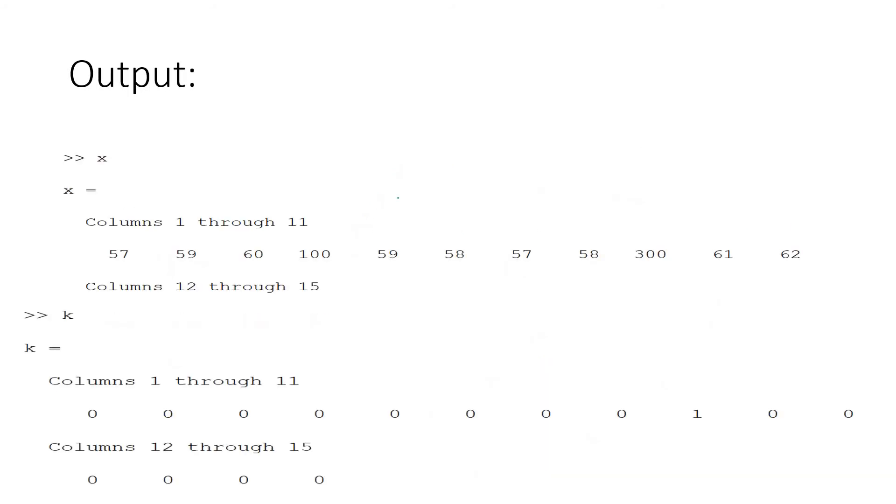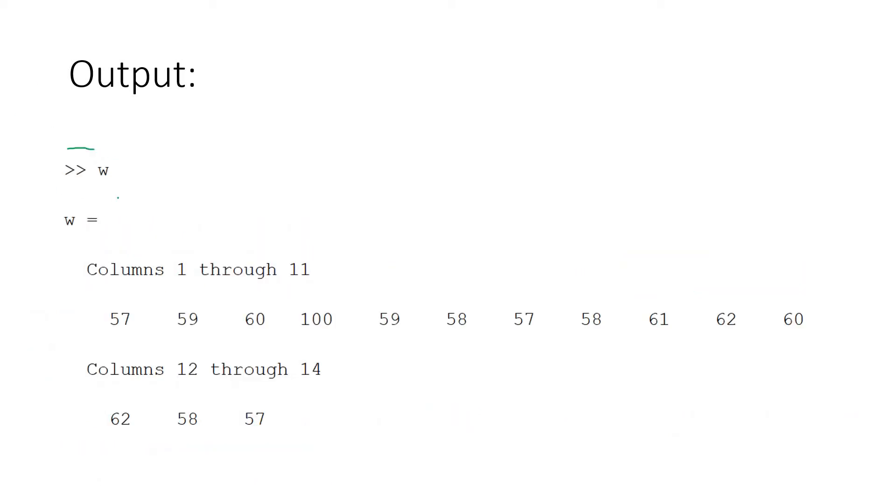Let us check. Suppose my x is this one. If you run our previous code you will be getting k value as all zeros apart from this one. This one is at which index? One, two, three, four, five, six, seven, eight, nine - at ninth index. You can check: at ninth index only 300 is present. This is giving us one kind of logical array which is showing whether outlier or not. But in our output we don't require this.